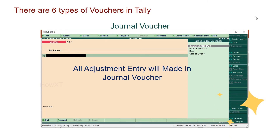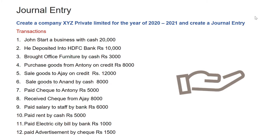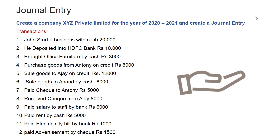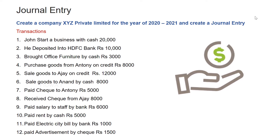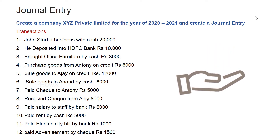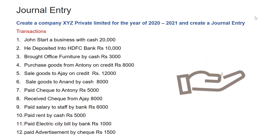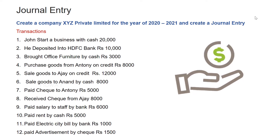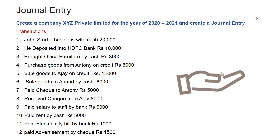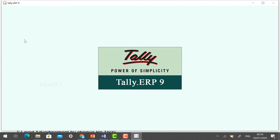So these are the six types of vouchers. We are going to see them in Tally. We already created the ledger in Day 2. Now we are going to create a voucher in Day 3. Let's see how to create a voucher — open Tally ERP 9 software.